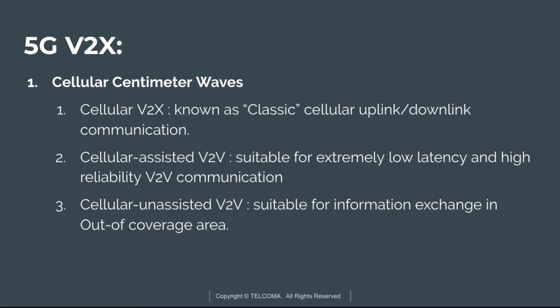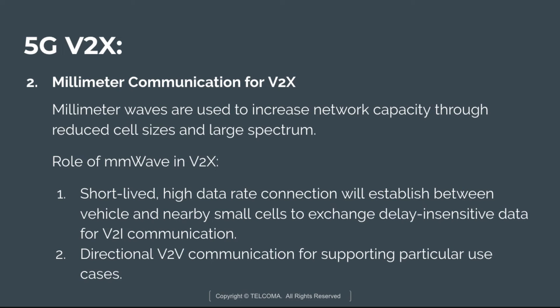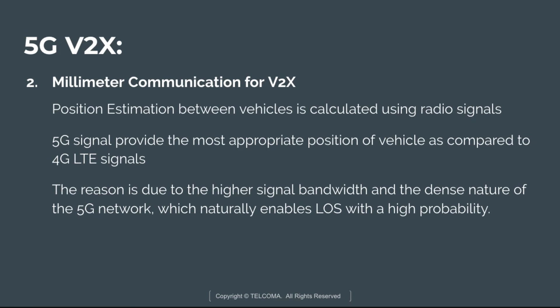Millimeter wave communication for V2X uses millimeter waves to increase network capacity by reducing cell size and using large spectrum. It provides short-lived, high data rate connections established between vehicles and nearby small cells to exchange delay-sensitive data for vehicle-to-infrastructure communication — for example, map updates and infotainment data in the downlink, and collective traffic and sensor information for large-scale traffic monitoring in the uplink. It also supports directional V2V communication for use cases such as bumper-to-bumper communication between vehicles in a platoon.